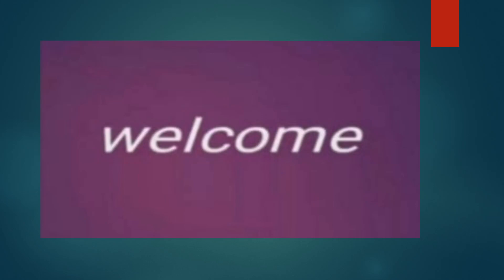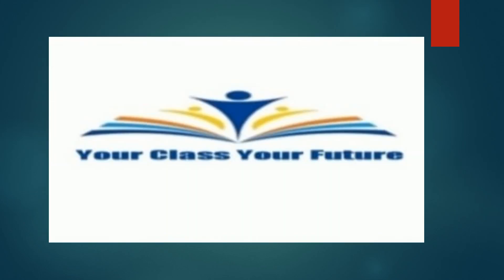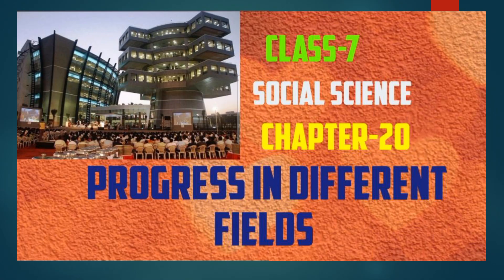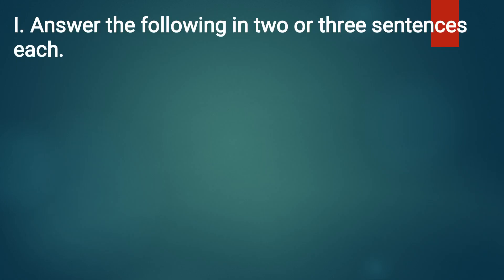Hello everyone, welcome to your class, your future. Let's discuss Class 7 Social Science subject, Chapter 20: Progress in Different Fields. Question answers. Main question number one: answer the following in two or three sentences each.